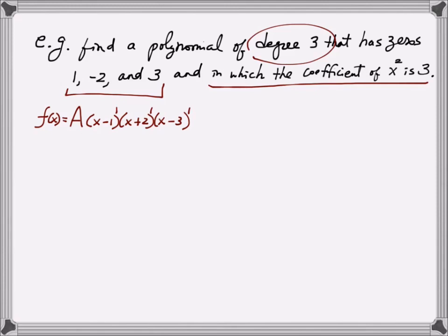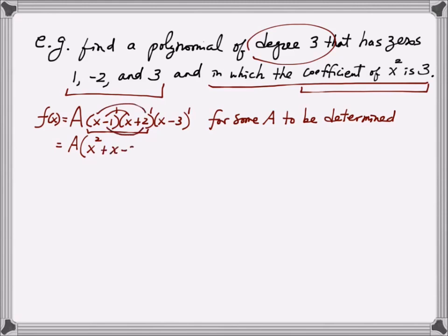This will have to be determined based on this other information that we're given, which says that the coefficient of x squared has to be 3. The information given to us is about x squared. So let's try to see if we can actually get the x squared term out of this expression here. Leave the a as it is, and I'm going to multiply these two factors first, and that's going to be x squared minus an x plus a 2x, altogether a plus 1x, and the constant term is going to be a minus 2. And I still have the x minus 3 factor there.